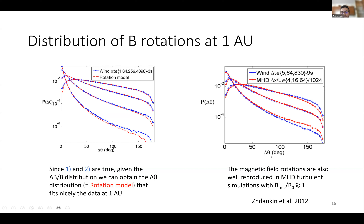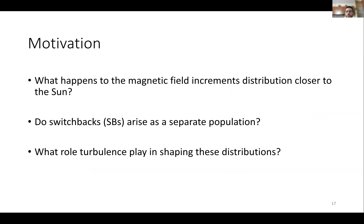These results can be reproduced quite nicely by MHD turbulence simulations, provided that the root-mean-square fluctuations are of order the background magnetic field. This is important because it tells us that turbulence is capable of reproducing the full distribution of magnetic field rotations in the solar wind. This brings us to the motivation of this work: what happens to the magnetic rotation distribution closer to the Sun, whether switchbacks arise as a separate population with respect to this distribution, and what role turbulence plays in shaping these distributions.